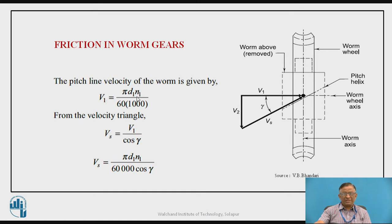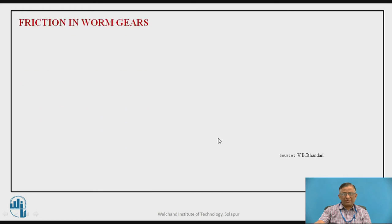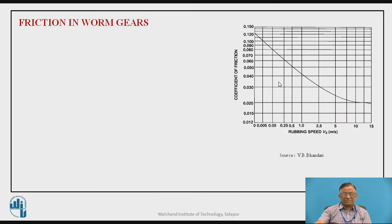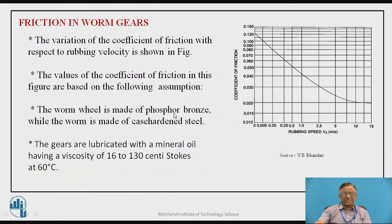The peripheral velocity V1 is given by pi times d1 times n1 divided by 60 into 1000, where n1 and d1 stand for worm speed and worm diameter respectively. The diameter is in mm, whereas V1 is required in meters per second. Using this equation, we can calculate the peripheral velocity of the worm. Once we know the peripheral velocity, we can calculate the sliding or rubbing velocity accordingly.